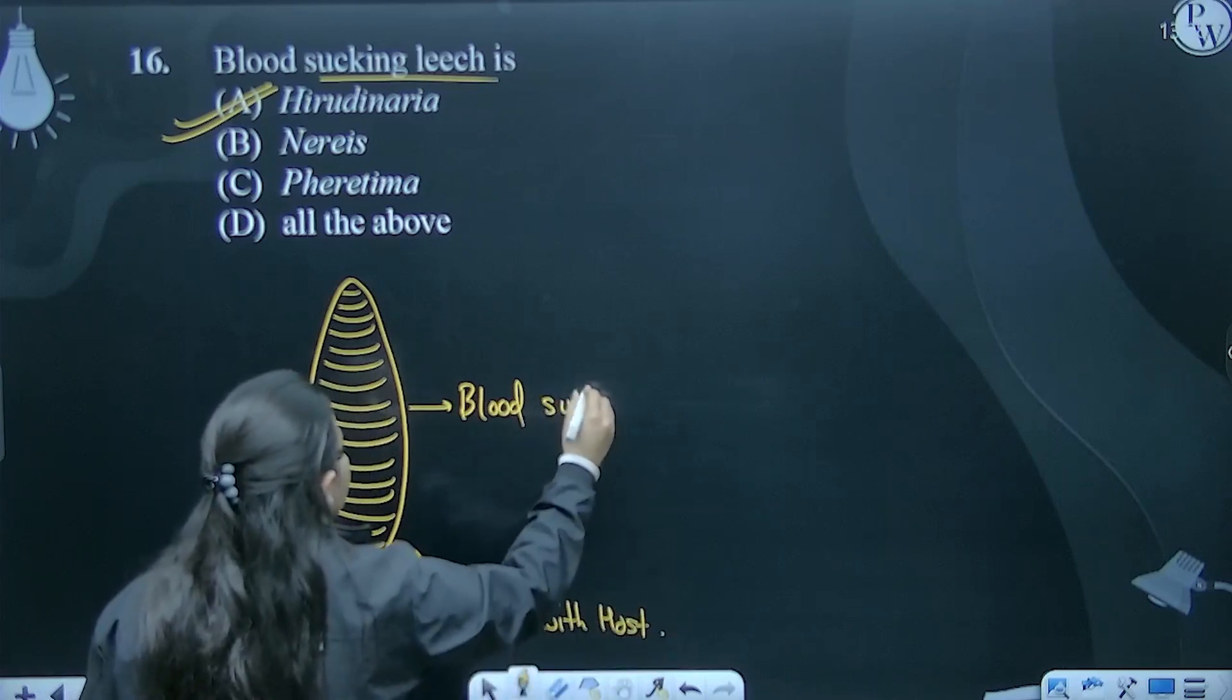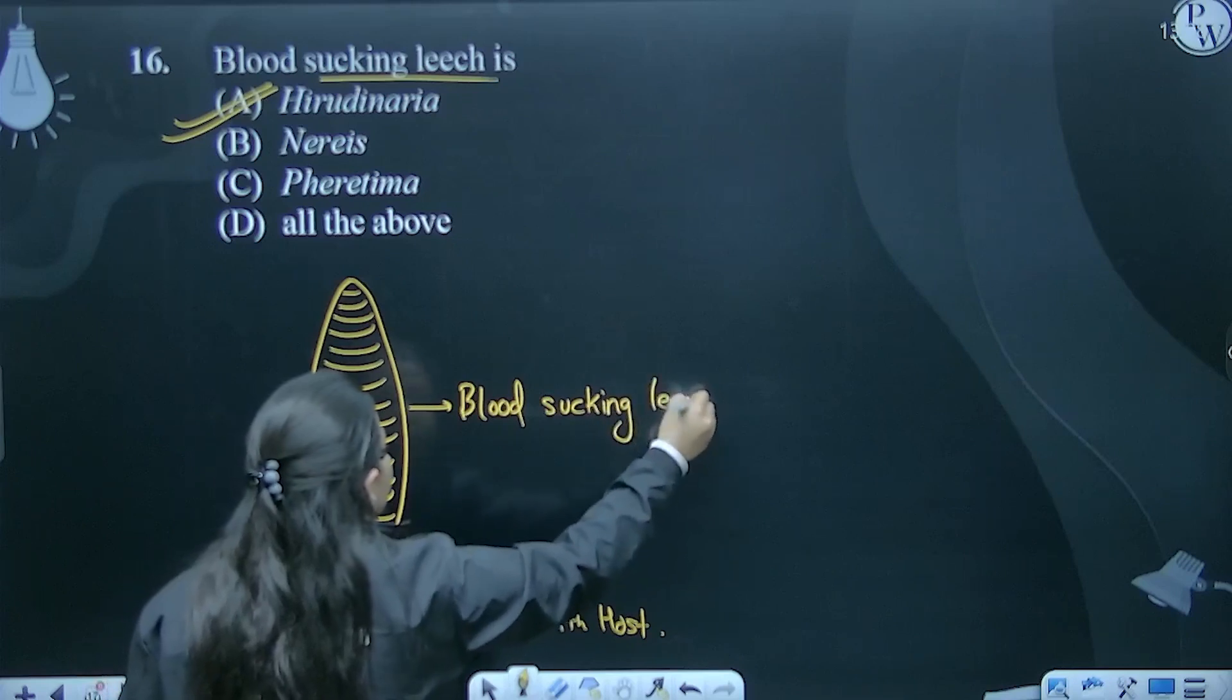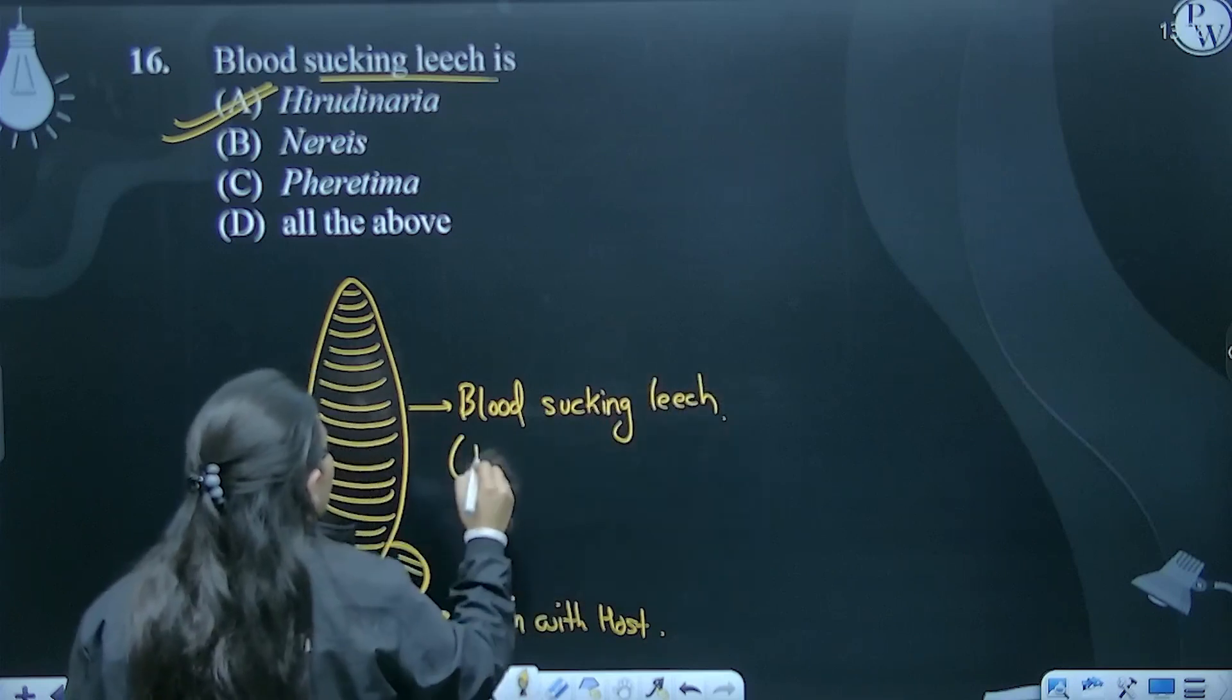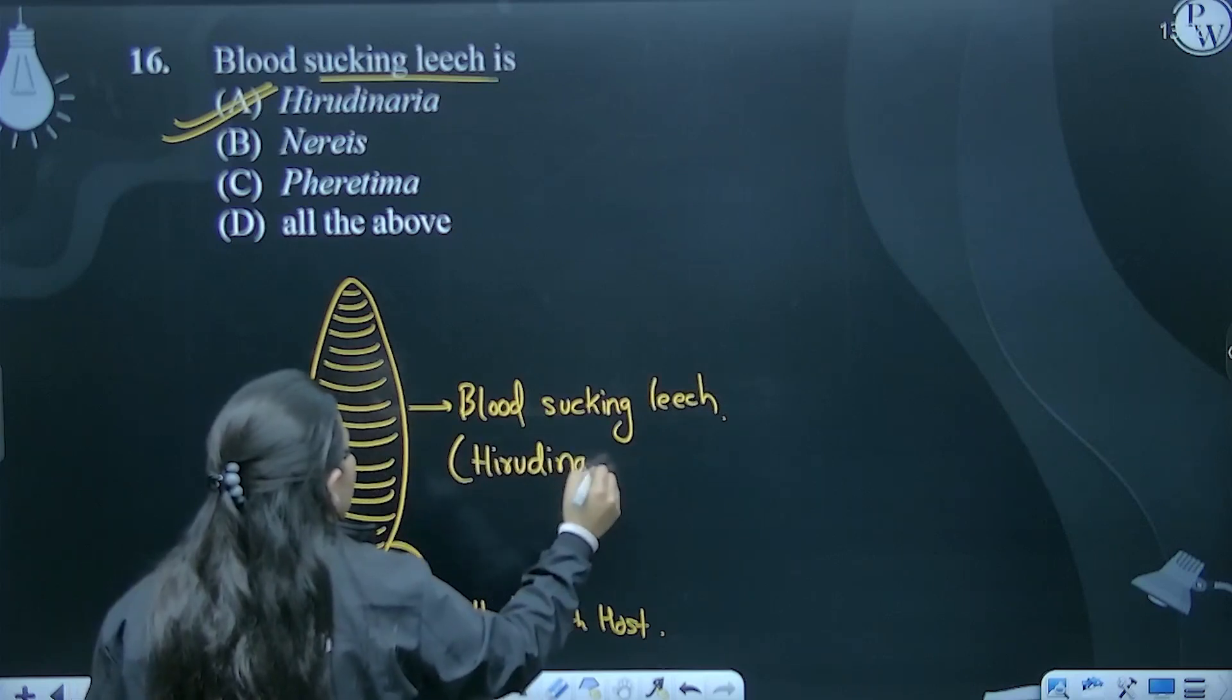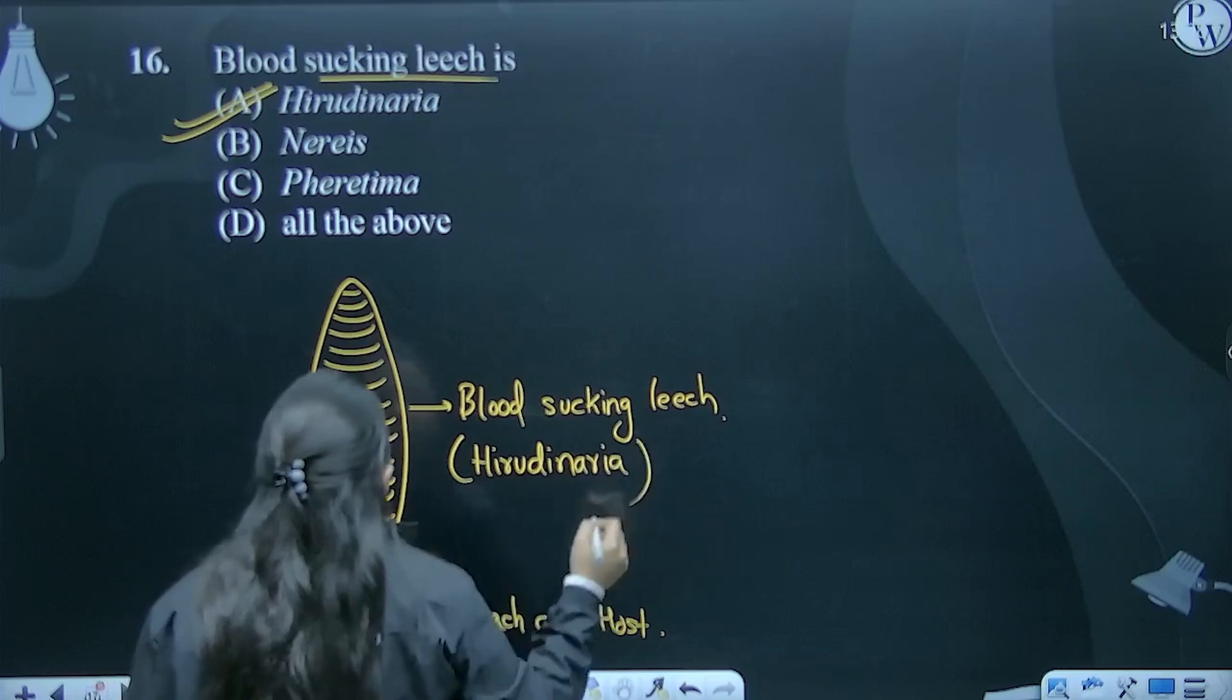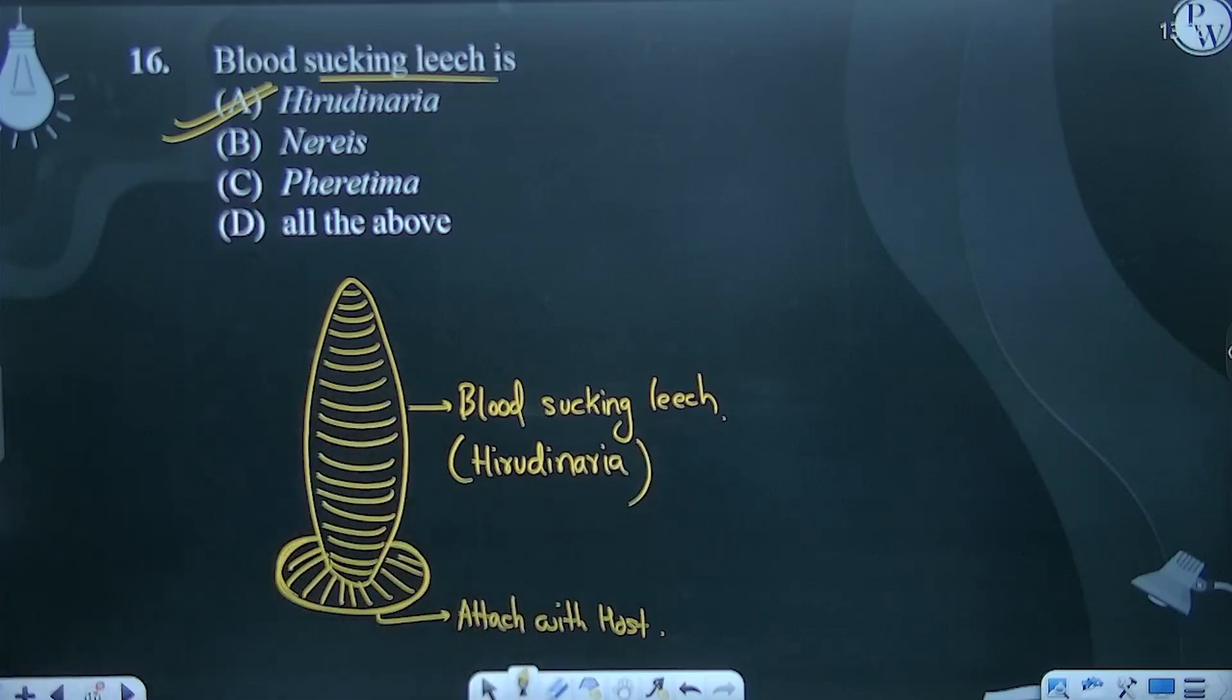Blood sucking leech hai, which we are calling Hirudinaria. Hirudinaria is the scientific name. So the answer for question number 16 is Hirudinaria - blood sucking leech.